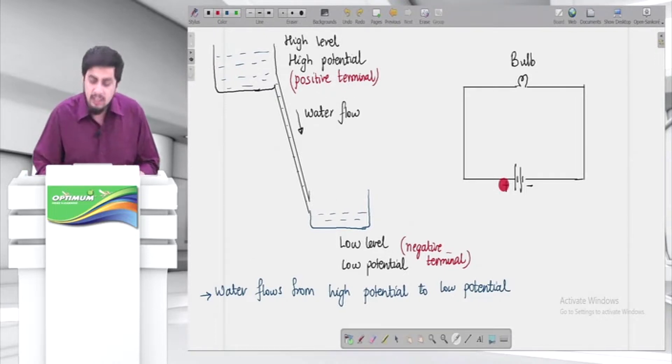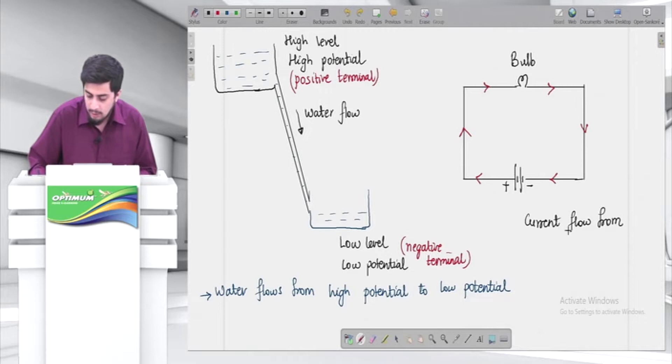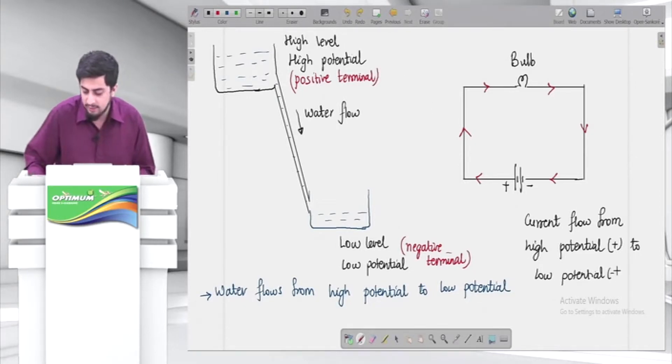So friends, as water flows from high potential to low potential, upar se high potential to low potential, yani usi tarah se, current also flows from high potential to low potential. Now what do you mean by that? High potential is positive, low potential is negative. That means the current will flow from high potential to low potential. That means it will start from here, high potential positive, and it will flow to negative potential. So current flows from high potential, that is positive, to low potential, that is negative. This will be the direction of current flow.